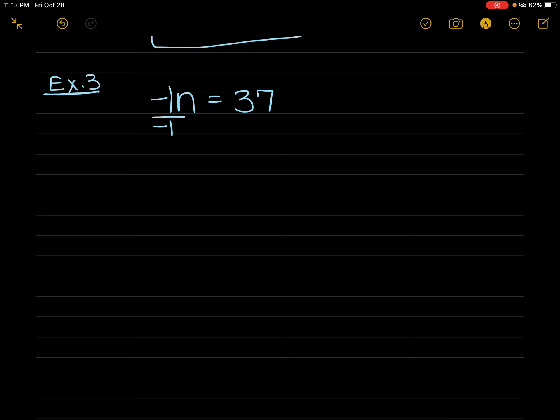And that makes this n = 37 divided by -1 is 37. And because the signs are different, the answer is negative.